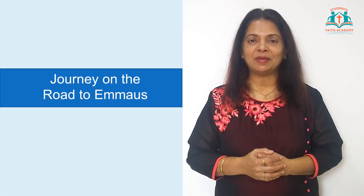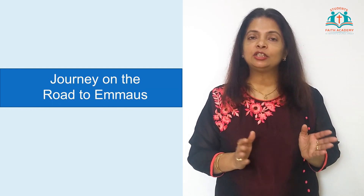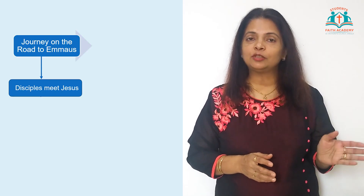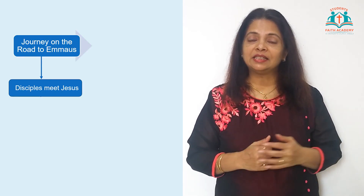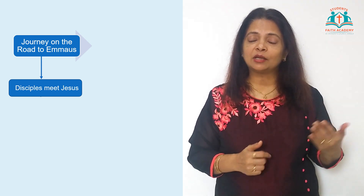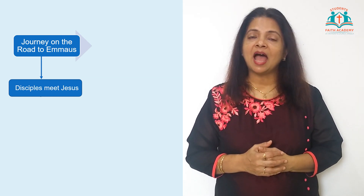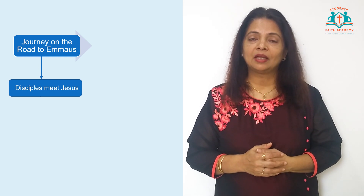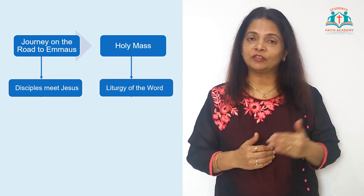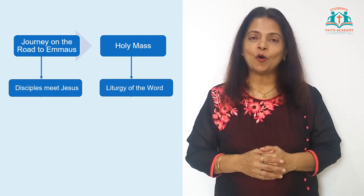In the last two lessons we learnt about the journey on the road to Emmaus. This journey can be divided into three parts. The first part is when the disciples meet Jesus. Jesus explains the scripture to them on this journey, but the disciples have not recognized him. We can compare this part of the journey to the first part of the mass, the liturgy of the word.